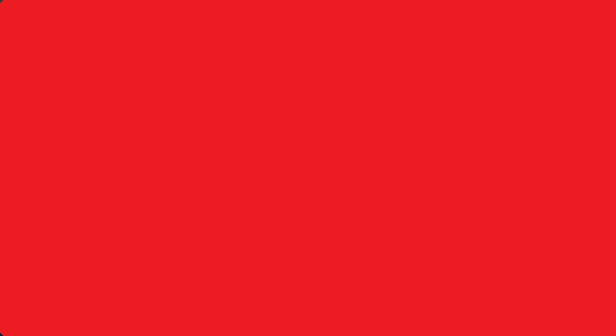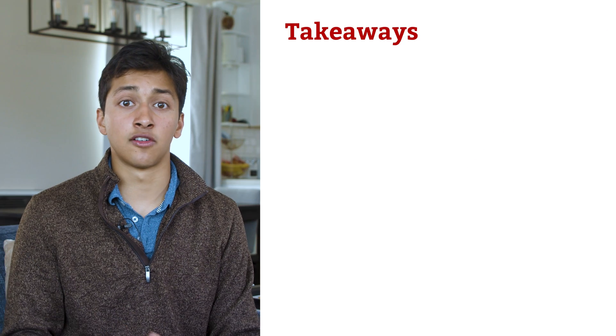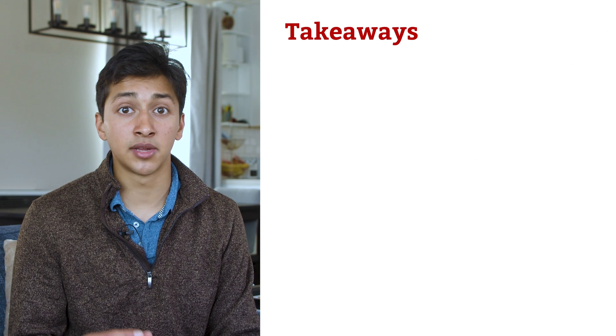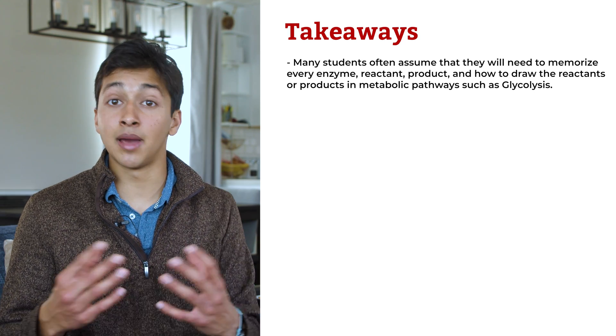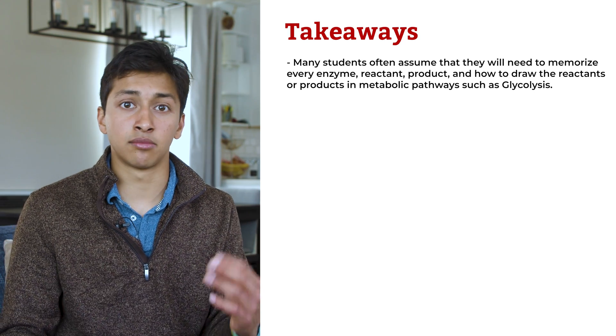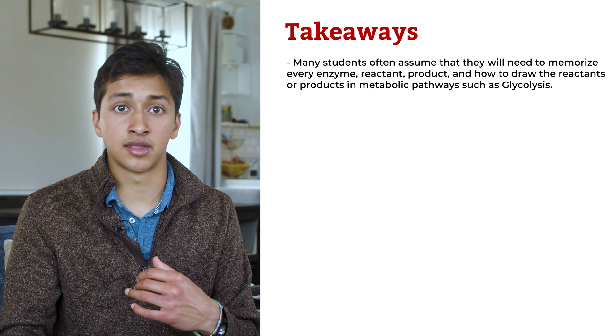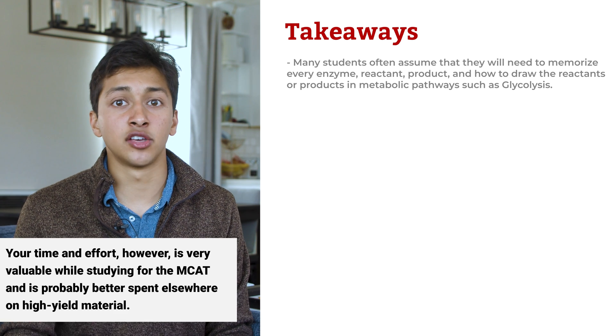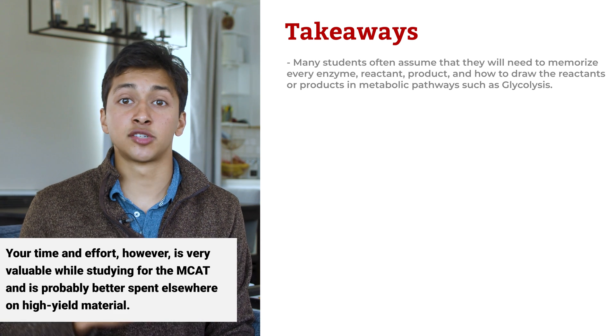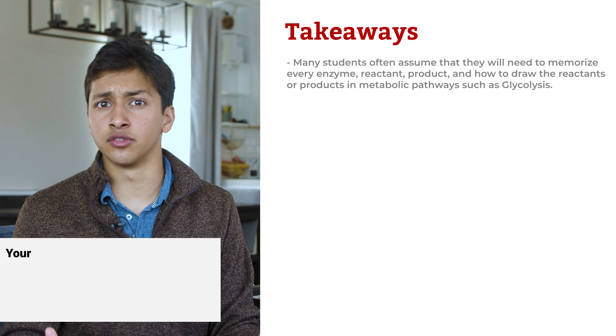Let's now look at MCAT Biology Biochemistry Tip number 4. Understand the integration of metabolism by focusing on rate limiting steps and big picture ideas. Many students often assume that they will need to memorize every enzyme, reactant, product, and how to draw the reactants or products in metabolic pathways such as glycolysis. Your time and effort, however, is very valuable while studying for the MCAT, and is probably better spent elsewhere on high yield material.